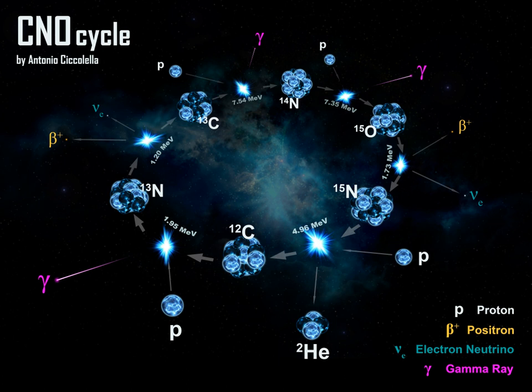In the CNO cycle, four protons fuse, using carbon, nitrogen, and oxygen isotopes as catalysts, to produce one alpha particle, two positrons, and two electron neutrinos.